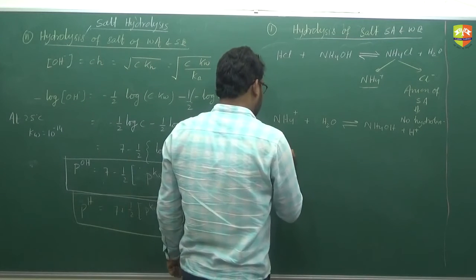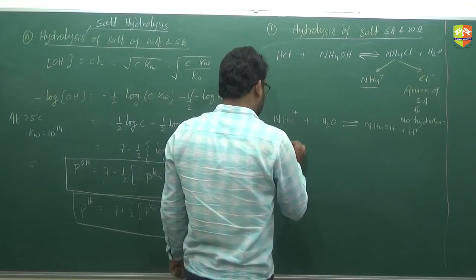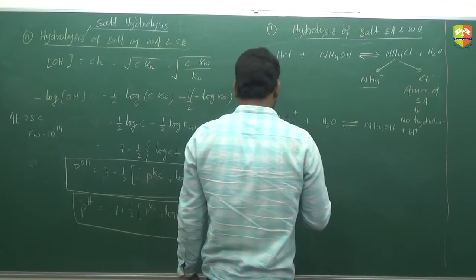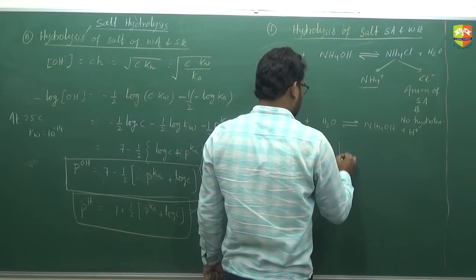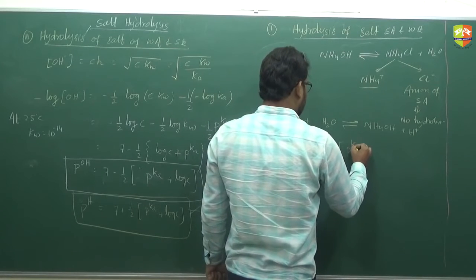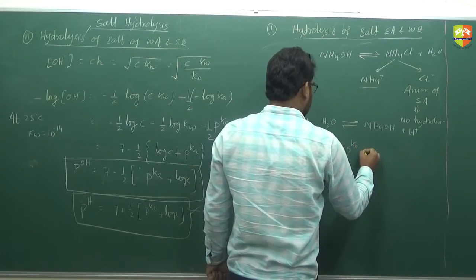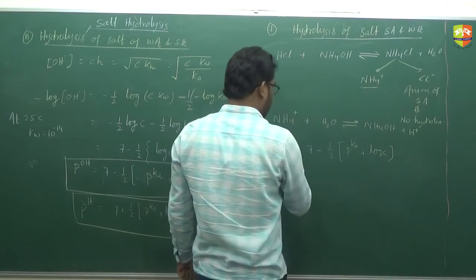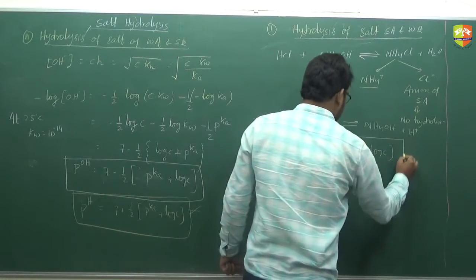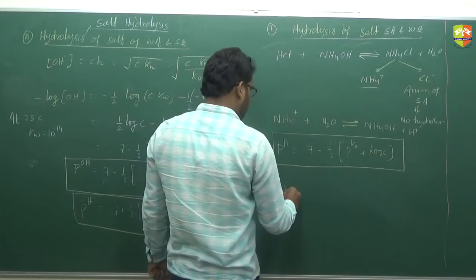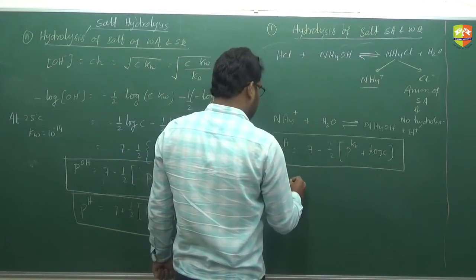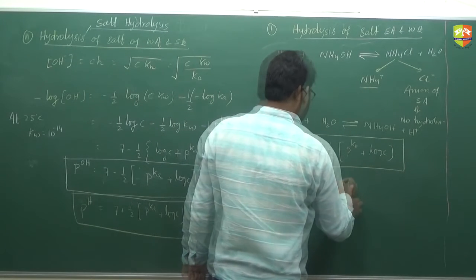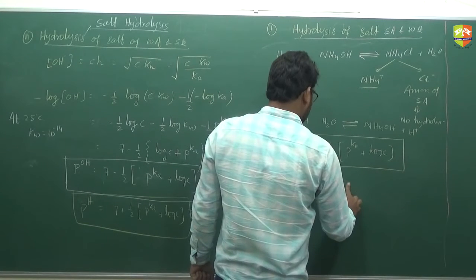The expression for pH is: since it is an acidic solution, it must be less than 7. pH equals 7 minus half of pKb plus log C. And pOH equals 7 plus half of pKb plus log C.